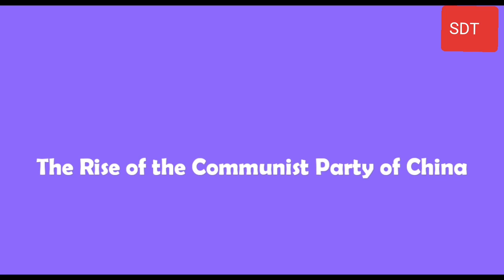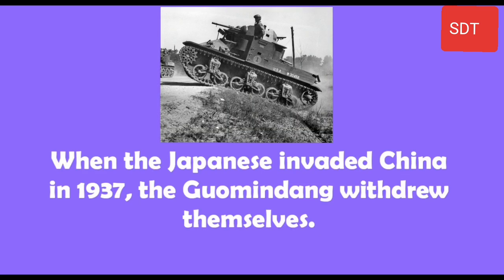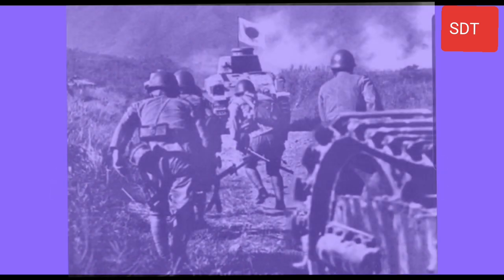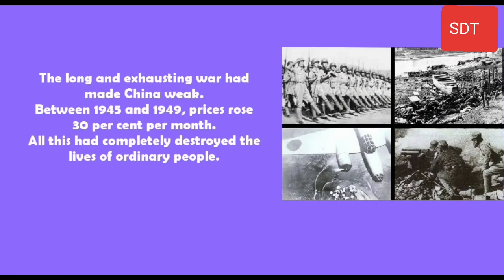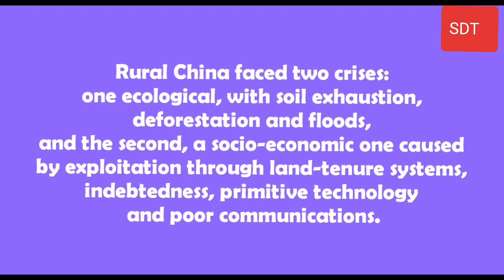The Rise of the Communist Party of China. When the Japanese invaded China in 1937, the Guomindang withdrew themselves. The long and exhausting war had made China weak. Between 1945 and 1949, prices rose 30% per month. All this had completely destroyed the lives of ordinary people.